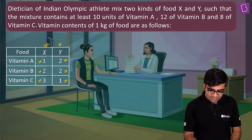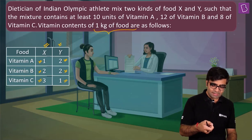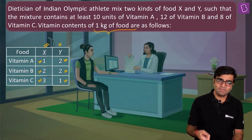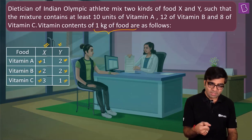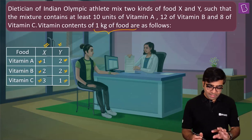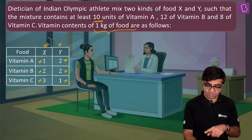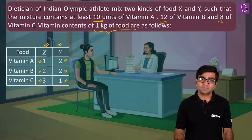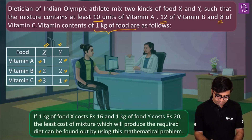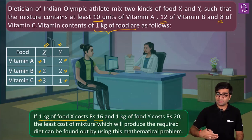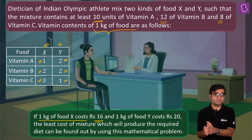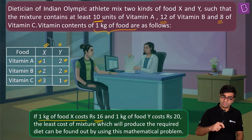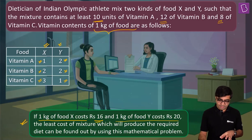One kg of food x contains vitamin A: 1 unit, vitamin B: 2 units, vitamin C: 3 units. Similarly, one kg of food y has vitamin A: 2 units, vitamin B: 2 units, and vitamin C: 1 unit. The aim is to have at least 10 units of vitamin A, 12 units of vitamin B, and 8 units of vitamin C. That is the distribution of food x and food y with respect to their vitamin content.